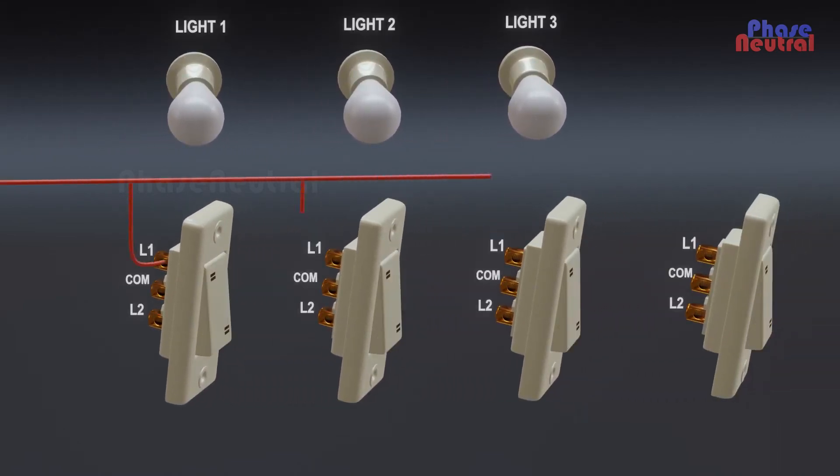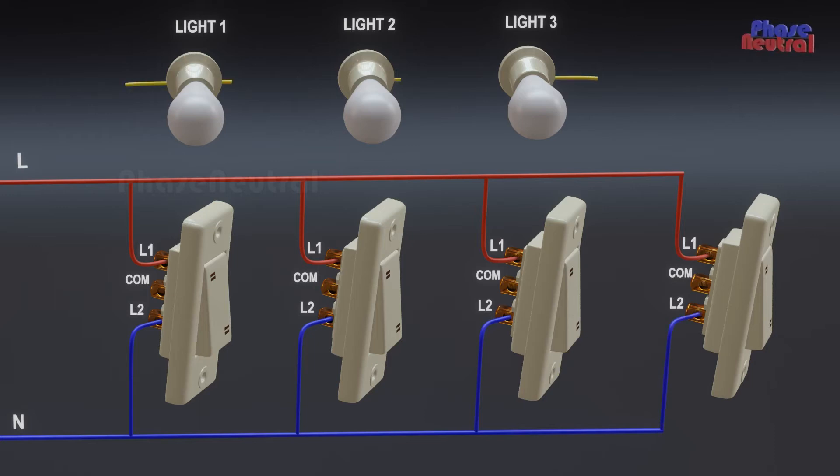Phase line connects to L1 terminal of two-way switches. And the neutral line connects to L2 terminal of two-way switches. Bulb terminals connect to the common terminal of the two-way switches.